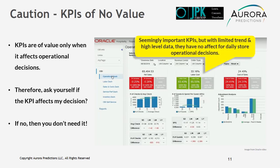For example, seemingly important KPIs may have limited trend and high-level data. Therefore, they have no effect on daily store operational decisions.